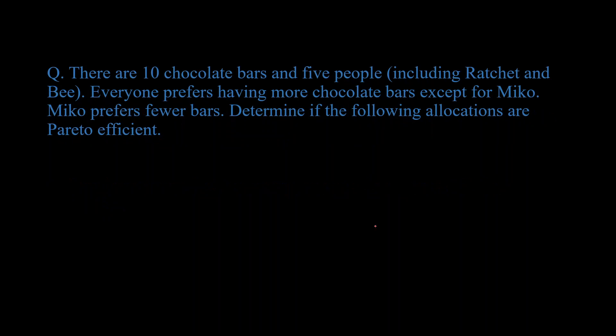So in this case, there are ten chocolate bars and five people, including Ratchet and B. Everyone prefers having more chocolate bars except for Miko — Miko actually prefers fewer bars. Determine if the following allocations are Pareto efficient. We have the first case: everyone has two bars each, so five people have two chocolate bars each.